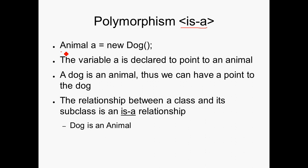Animal a = new Dog() is completely valid, because the variable a is declared to point to an animal, and since a dog is an animal, we're all good. The relationship between a class and its subclass is an is-a relationship — this is very critical. A dog is an animal.